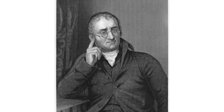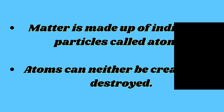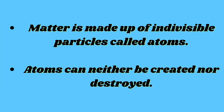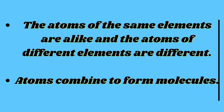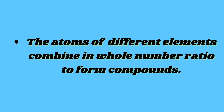The credit for the discovery of nitrogen goes to Daniel Rutherford. John Dalton was the first chemist to propose that matter is made up of tiny individual particles called atoms. His atomic theory can be summarized as follows: matter is made up of individual particles called atoms; atoms can neither be created nor destroyed; atoms of the same element are alike; and atoms of different elements are different.